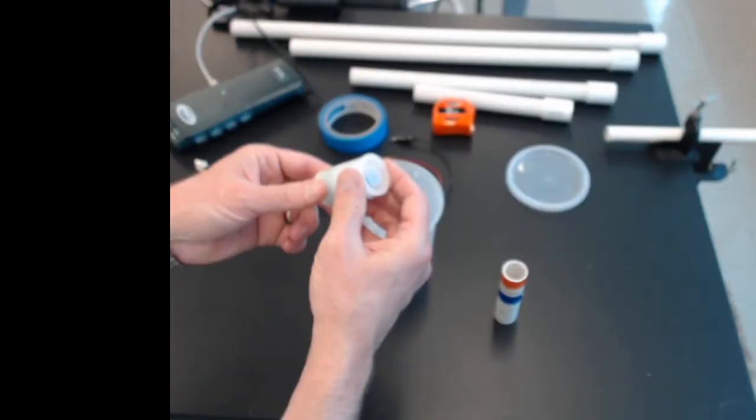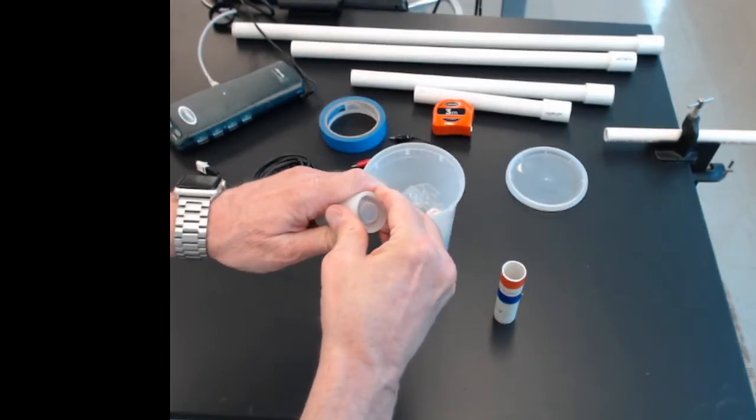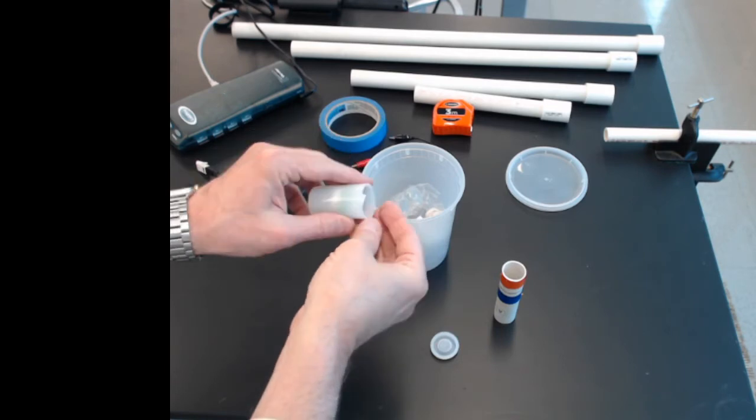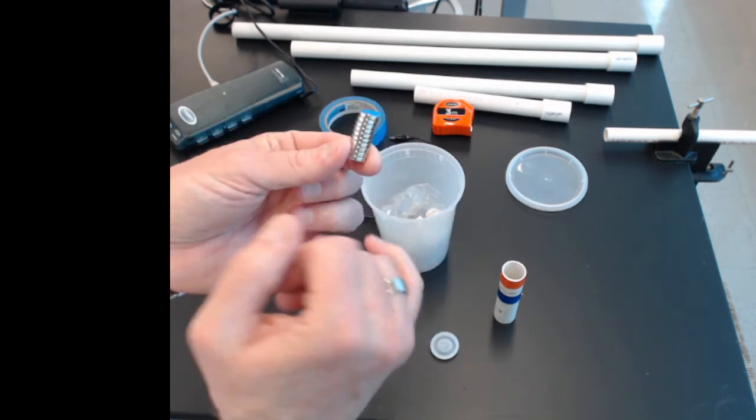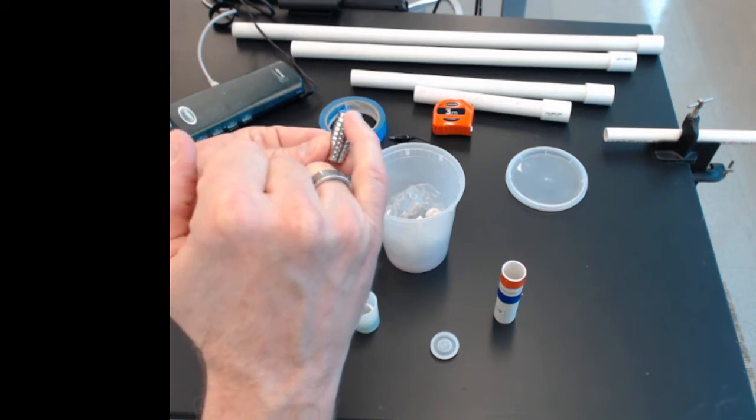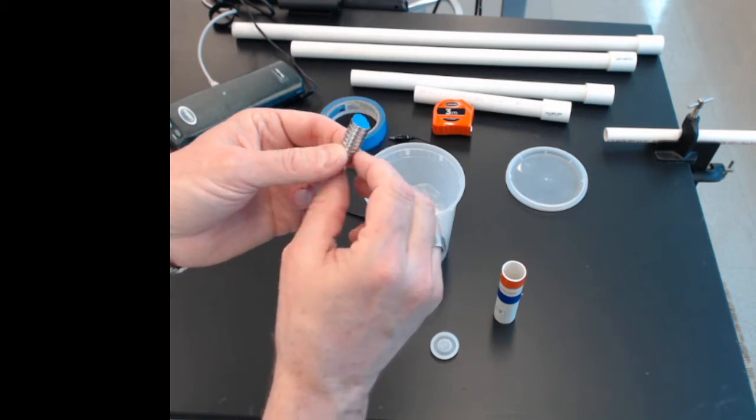This little film canister is a kit within a kit. It has the magnets. There are actually ten little pellets, magnetic pellets, all stacked together. And that will be the magnet we drop through.